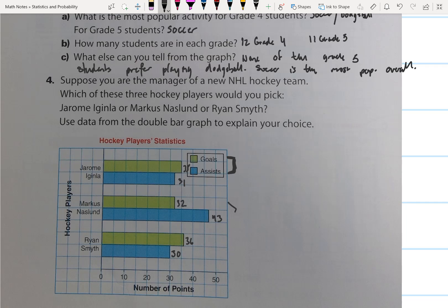So if I was just going to look at points, I would pick Marcus Naslund. And I would pick Marcus Naslund because he got more assists than goals. And to me, that equals a good team player.